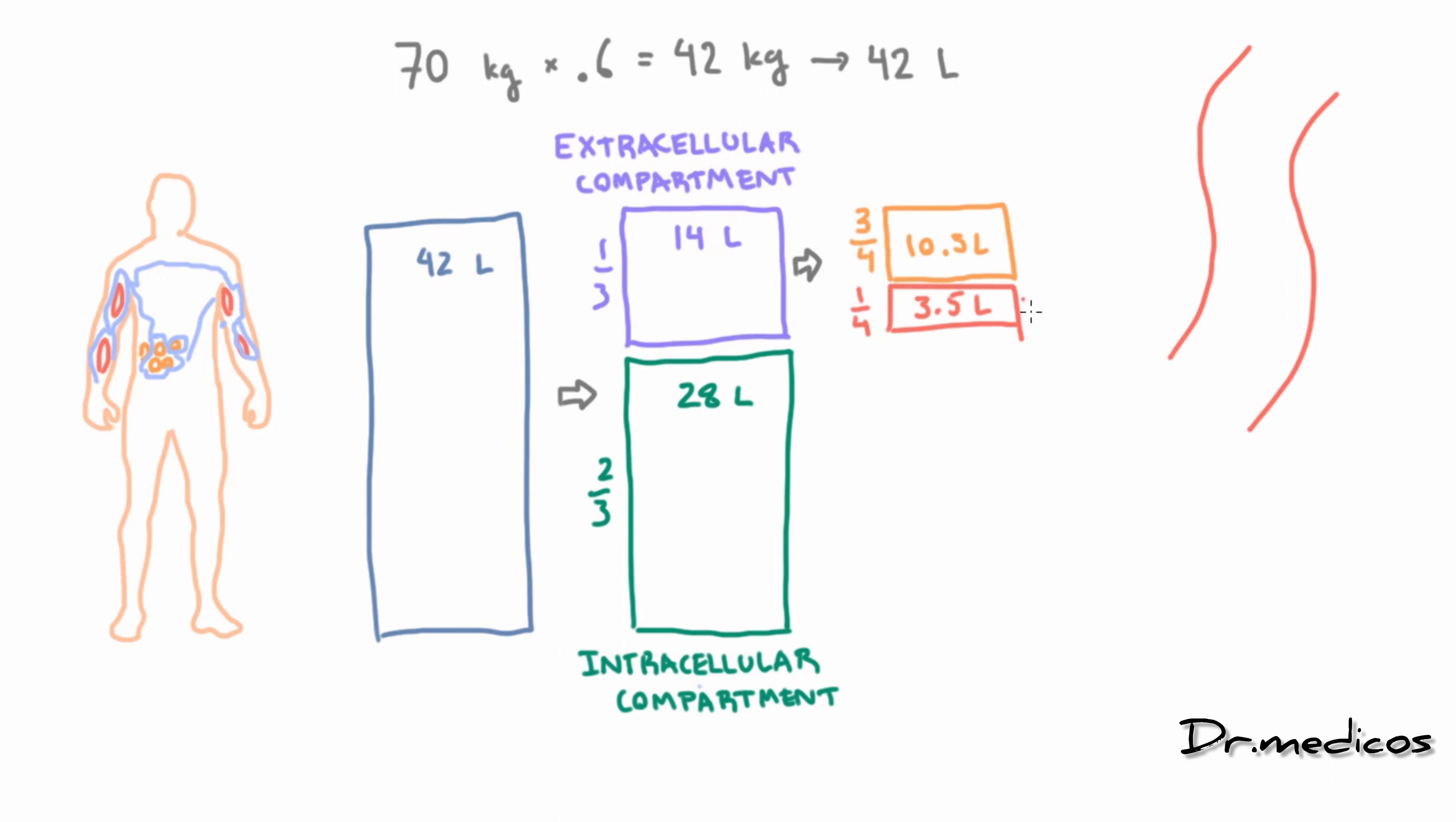But what's confusing is that this quarter that's inside blood vessels is not the only thing in the blood vessels. Remember, you also have red blood cells. Red blood cells count as intracellular fluid. So this extracellular part we're talking about is just the plasma around the red blood cells.